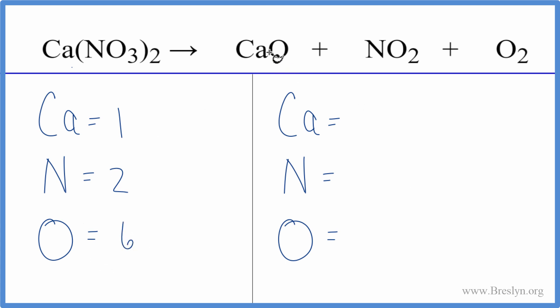On the product side we have one calcium, one nitrogen, and then all these oxygens. We have one plus two plus the two here in the oxygen. So we have a total of five oxygens.